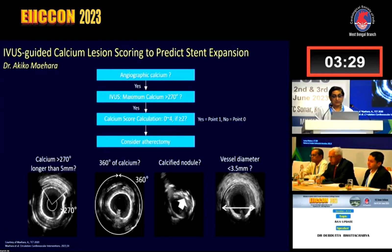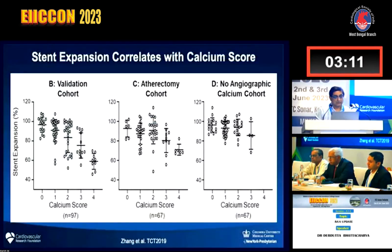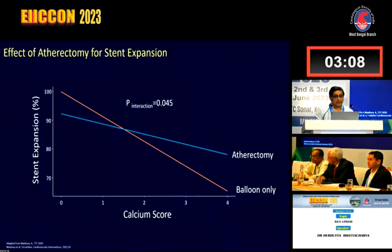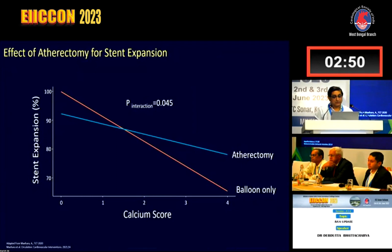The scoring begins: Is there angiographic calcium? Is the IVUS maximum calcium arc greater than 270 degrees? Is the calcium score greater than 2? If the score is greater than or equal to 2, it is significant — consider atherectomy. For angiographic calcium and IVUS arc greater than 270 degrees, you score one point each. If total is greater than 2, proceed with calcium modification by atherectomy. As the calcium score increases, balloon-only procedures work less well, while atherectomy achieves much better stent expansion.